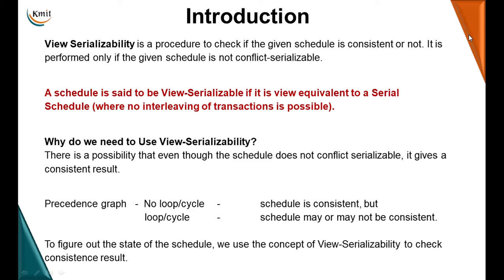So the precedence graph only tells us that if there is no loop, the schedule is conflict serializable and consistent. But if there is a loop in the precedence graph, the schedule may or may not be consistent. To figure out this state of the schedule, we use a concept called view serializability. It is a procedure to check if the given schedule is consistent or not, and it is performed only if the given schedule is not conflict serializable.